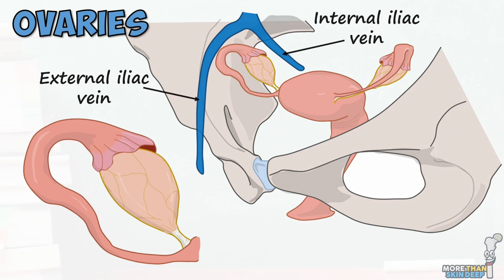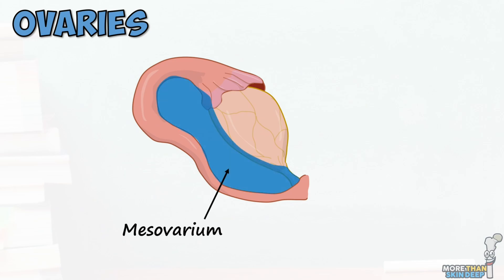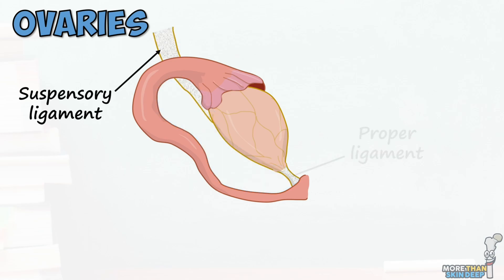The ovaries are supported anteriorly by a flat fold of peritoneum known as the mesovarium. The ovaries are held in their position by the suspensory ligaments of the ovary laterally and the proper ovarian ligament medially. The suspensory ligament extends from the mesovarium to the pelvic wall, acting to hold the ovary in place, and is also the conduit for all of the blood and nervous supply to the ovaries.